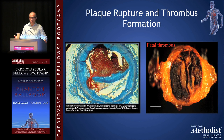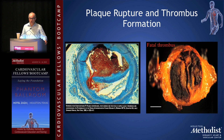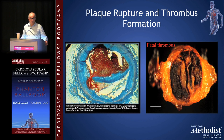Here are the things that we deal with. On your left, a partially occlusive thrombus — this is the paradigm for non-ST segment elevation acute coronary syndromes. There's a big clot there nonetheless. On the right, a completely occlusive thrombus. This is the paradigmatic model for ST elevation MI.